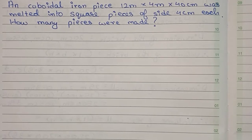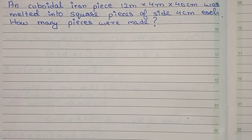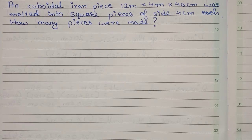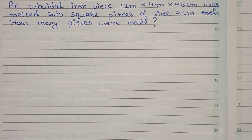Hello guys, welcome to this video. In this video our question is: a cuboidal iron piece 12 meter by 4 meter by 40 centimeter was melted into square pieces of side 4 centimeter each. How many pieces were made? So this is our question.